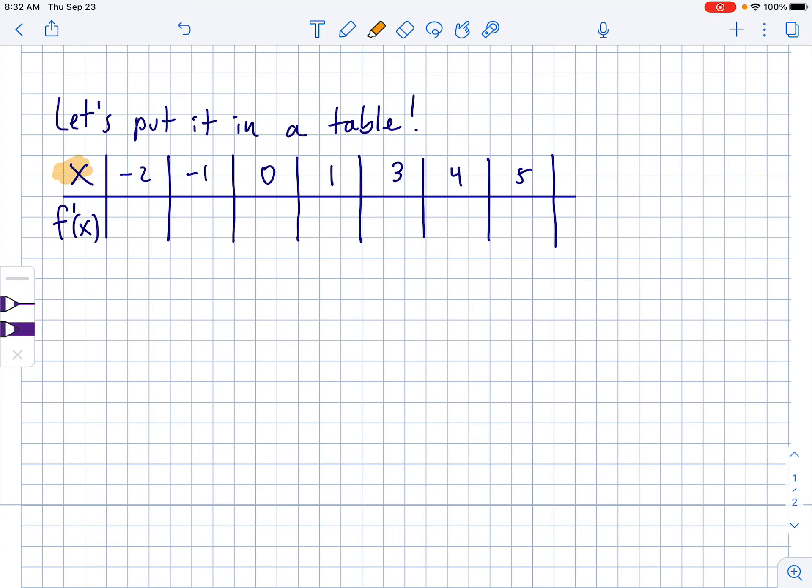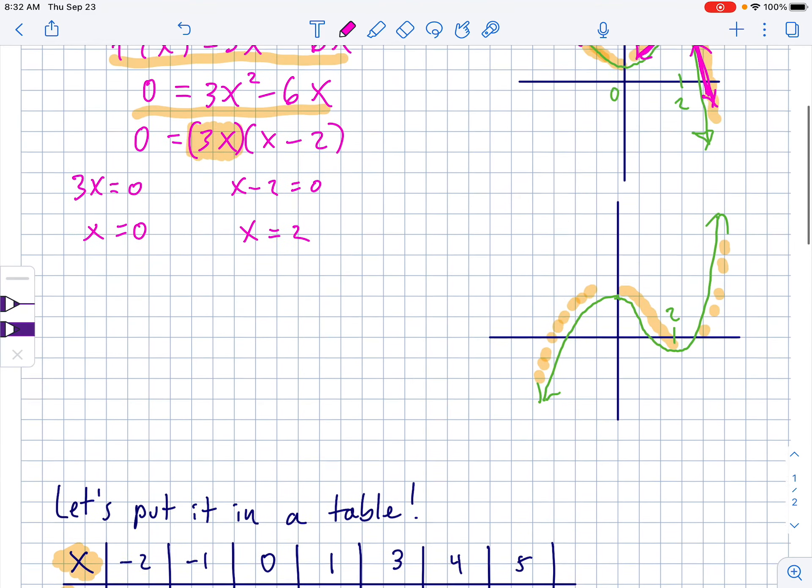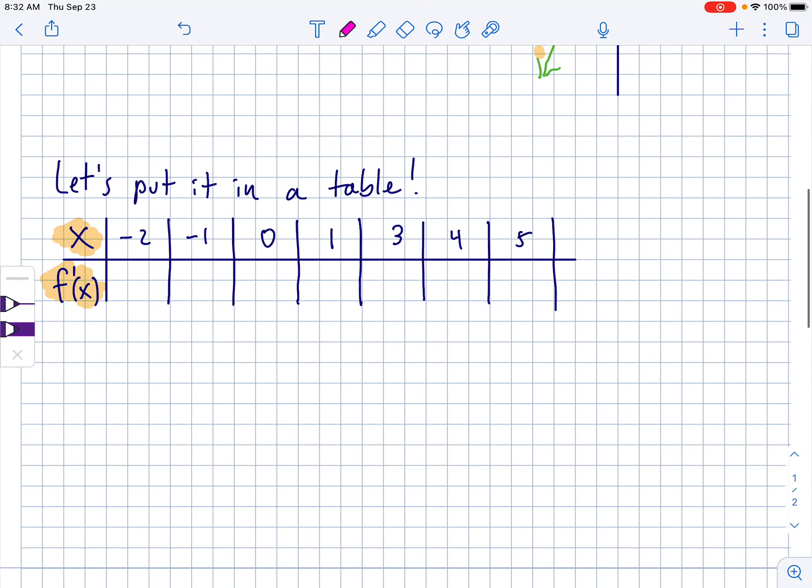So, let's use a table. Notice on top, I have just straight up x values, and on bottom, I have derivative values. So, we're going to use our derivative, what was it, 3x squared minus 6x. So, f prime of x is equal to, let's just put it here for reference so I can use it.